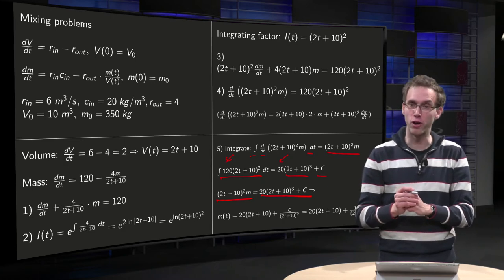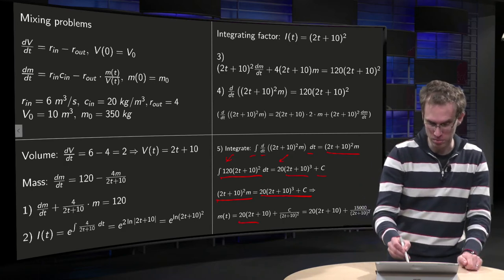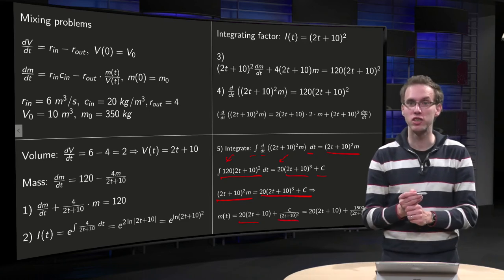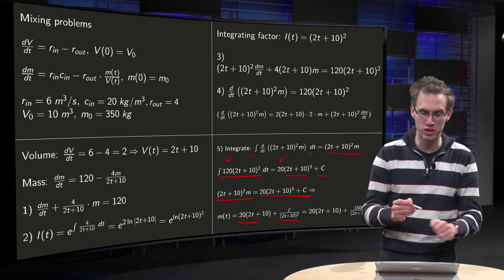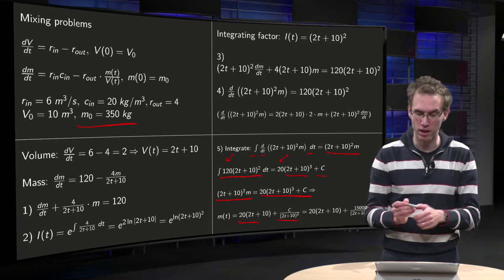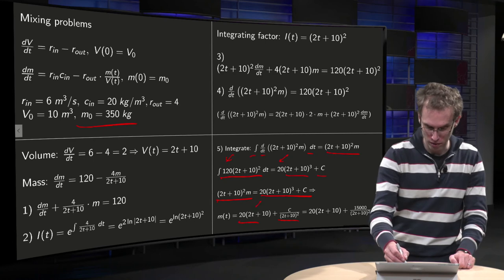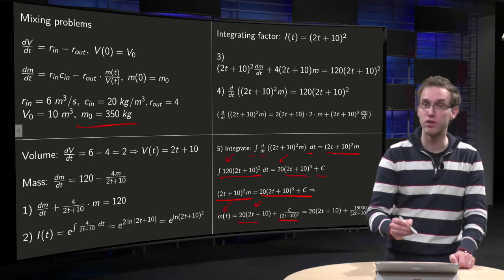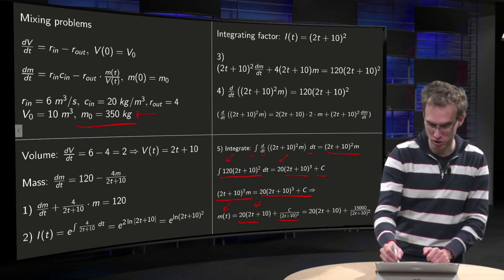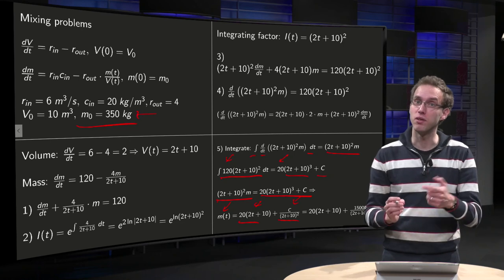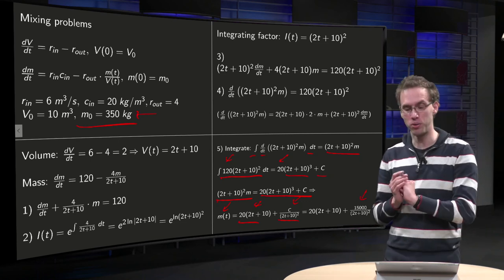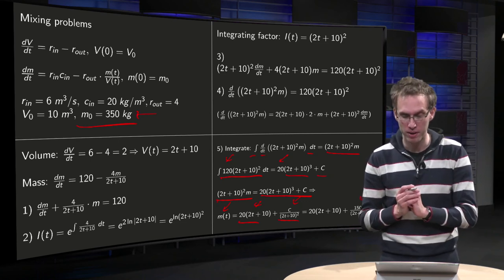And then we want to solve for m. So m(t) equals 20 times (2t + 10) plus integration constant divided by (2t + 10) squared. And we can determine the c by the m(0) of 350 kilograms. So if you put in t equals 0, over here you get the 200, over here you get 350 from the initial condition. So 150 has to be equal to c over 100. So c equals 150 times 100 is the big number over there, which gives you your m as function of t.